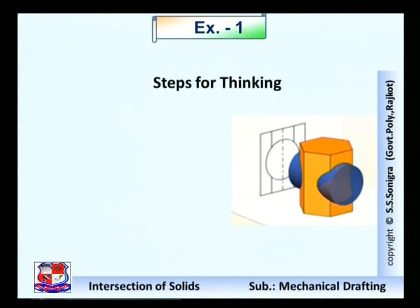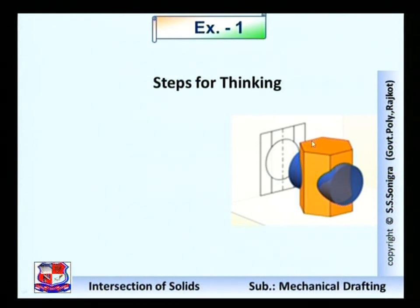Let me think through the steps. This is the diagram showing the given condition. A hexagonal prism is standing on its hexagonal base with two sides parallel to the XY line — one side here and another here, both parallel to the XY line. The penetrating cylinder passes through this hexagonal prism.